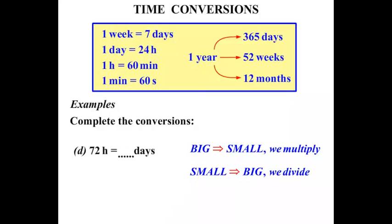72 hours equals how many days? Well hours and days. What's the connection? Well one day is 24 hours. So we're going to be using a factor of 24. We are changing from hours to days, so we're going from something smaller to something bigger. So we divide.